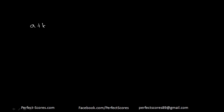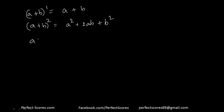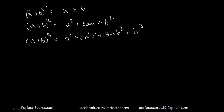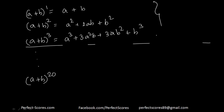You must have seen these identities a lot in school. For example, a plus b whole square equals a squared plus 2ab plus b squared. Or a plus b raised to the power 1 is a plus b, and a plus b raised to the power 3 is a cubed plus 3a squared b plus 3ab squared plus b cubed. But if I ask you what is a plus b raised to the power 20, that's where a huge problem comes — which is why we have to observe patterns.